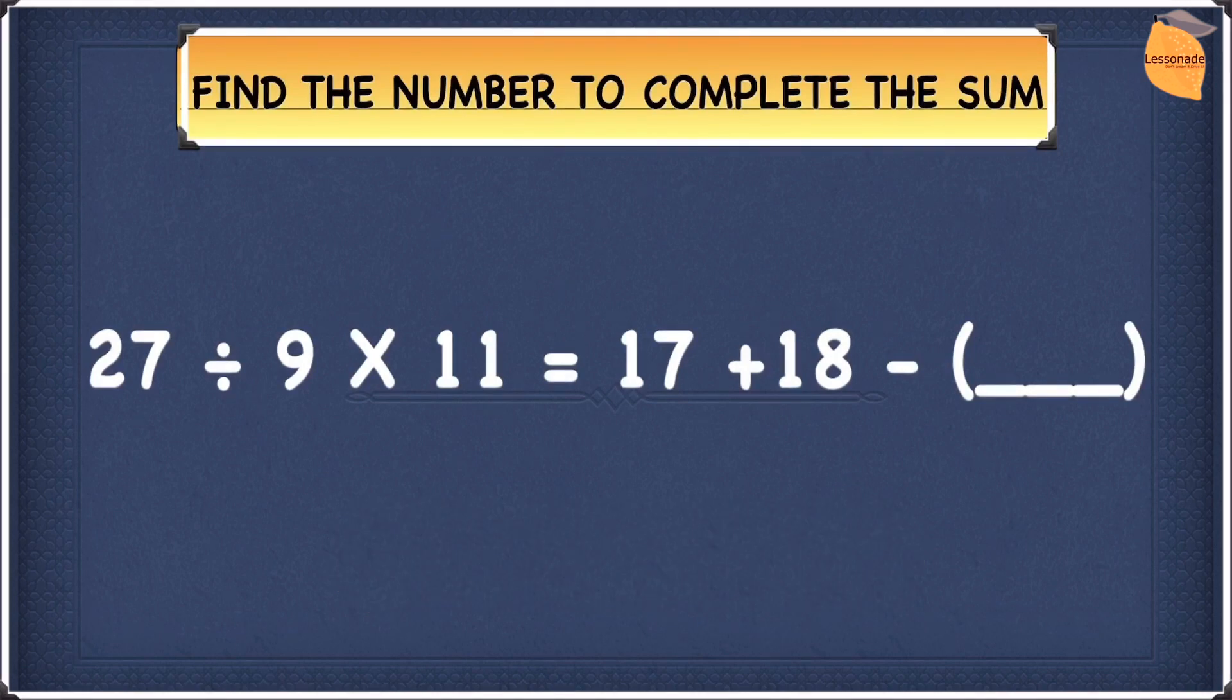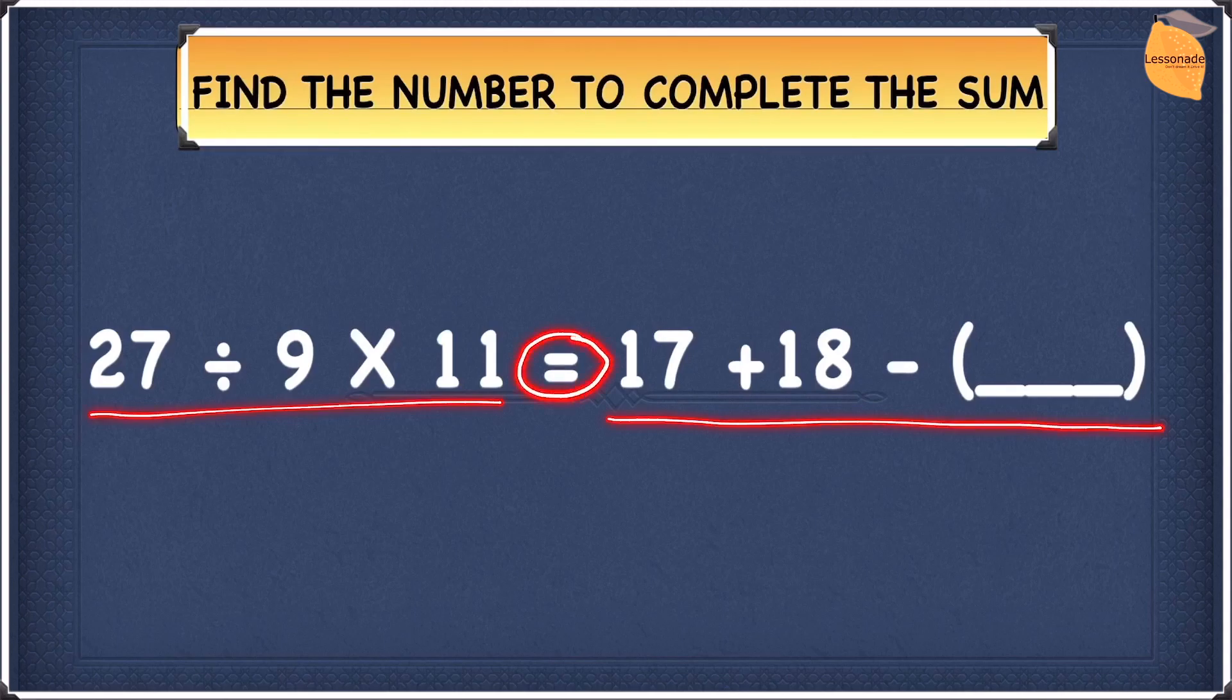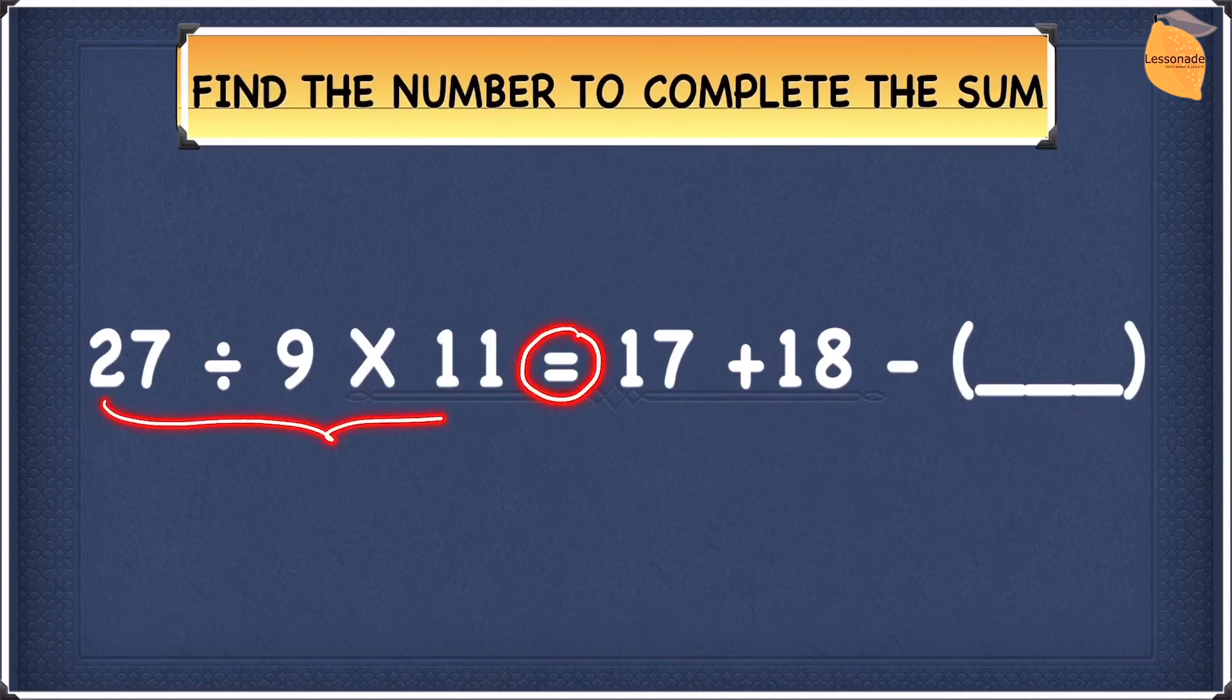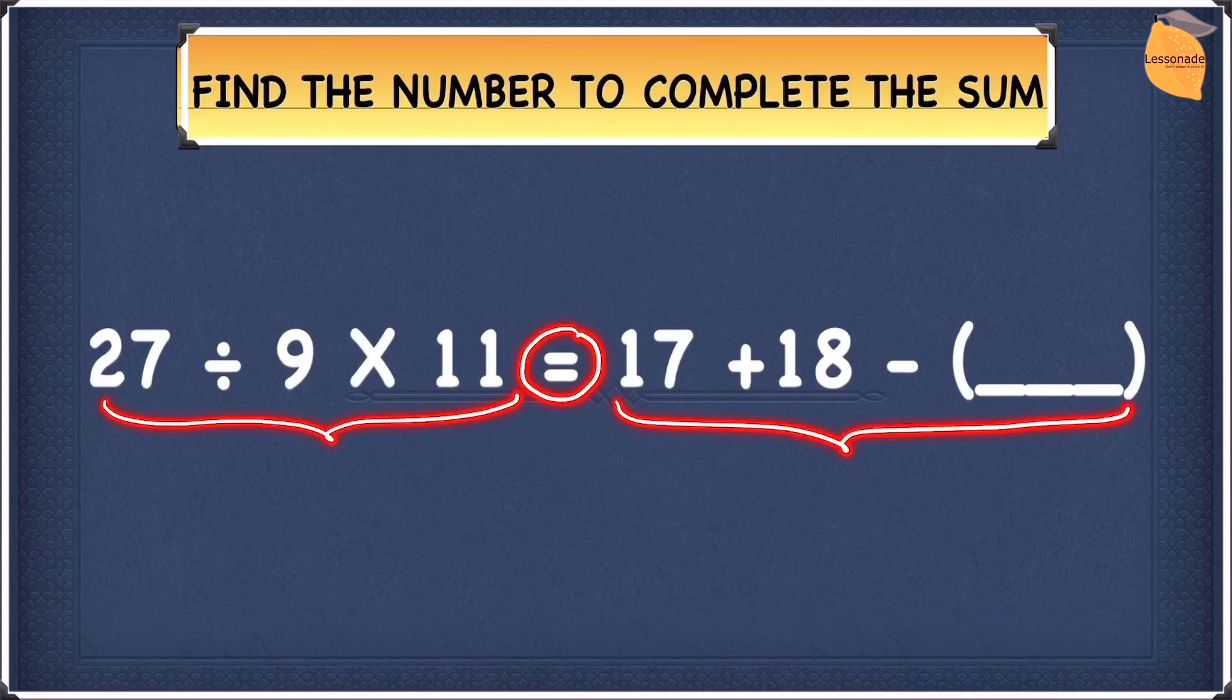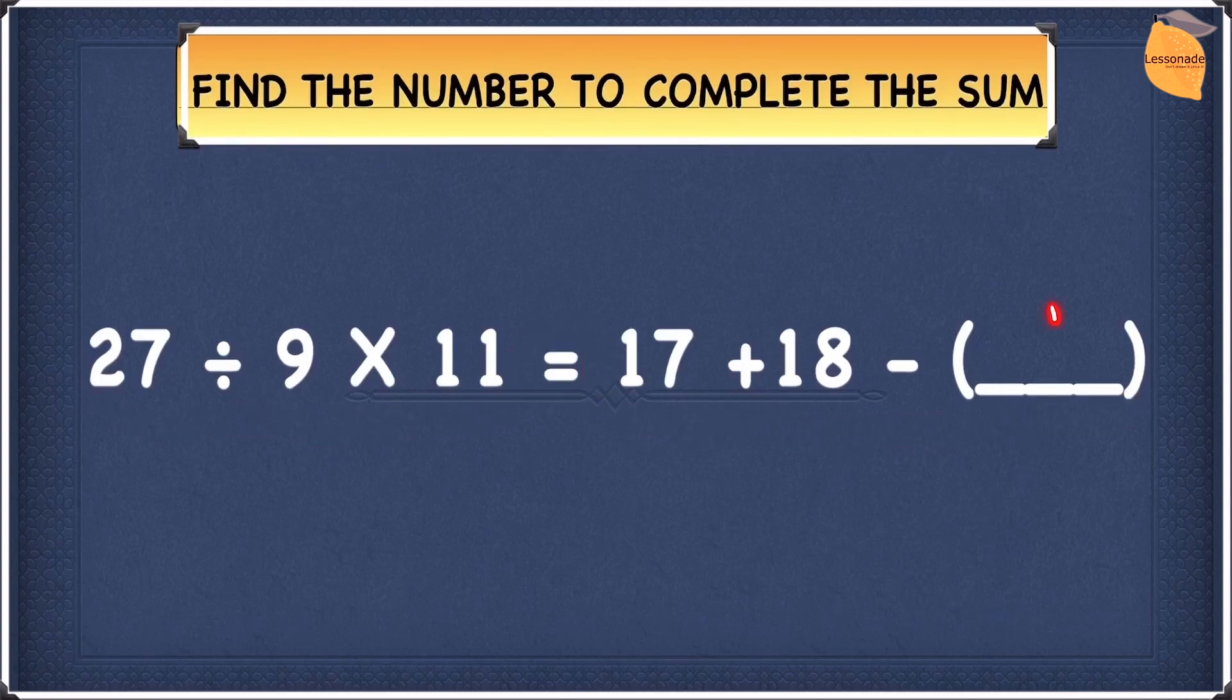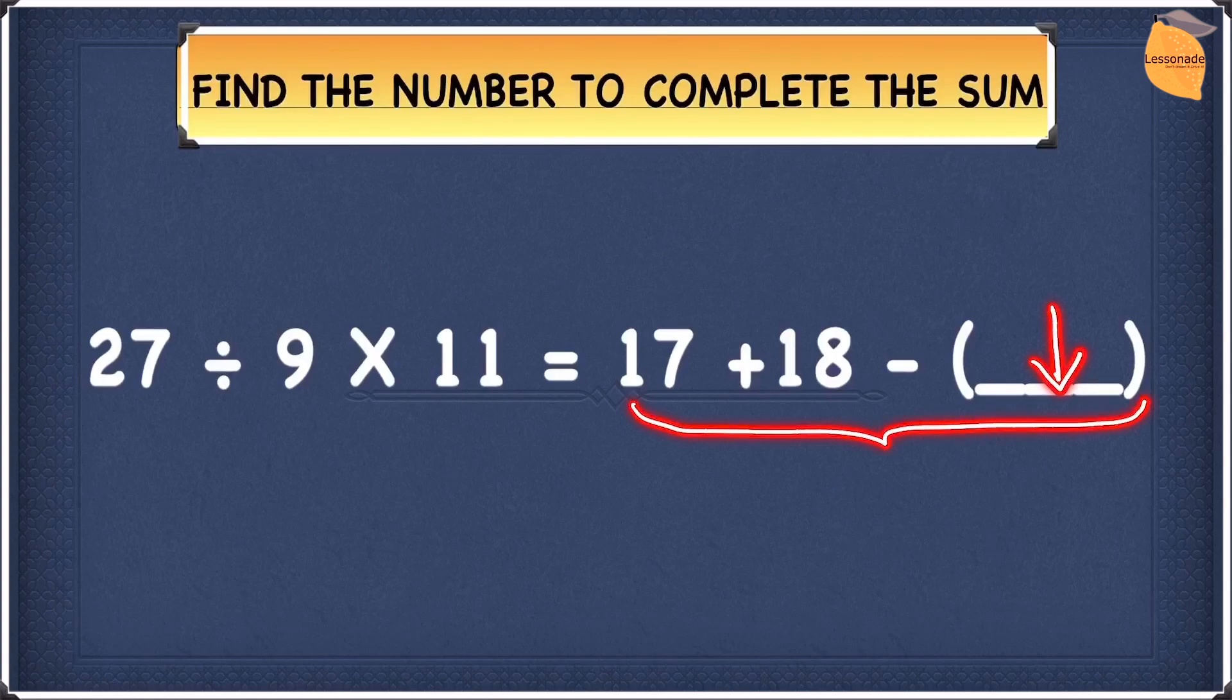Let's look at this question. We have a left hand side, a right hand side, and an equal sign in the middle. This means the sum on the left hand side must equal the sum on the right hand side. Our aim is to find the missing number, and when we do this sum along with the missing number on the right hand side, it must equal the sum on the left hand side.